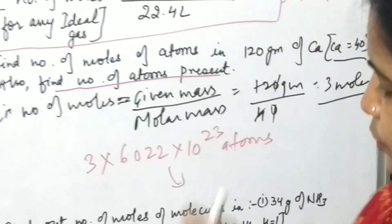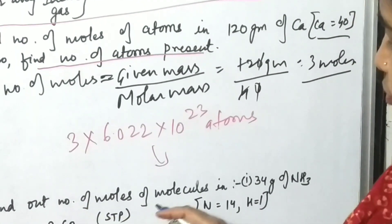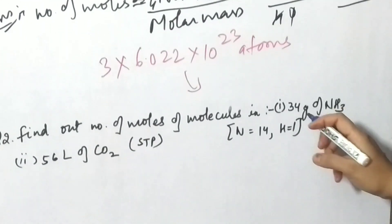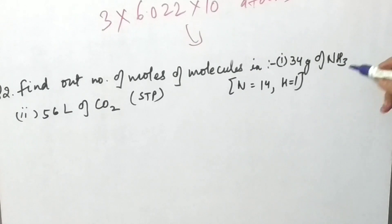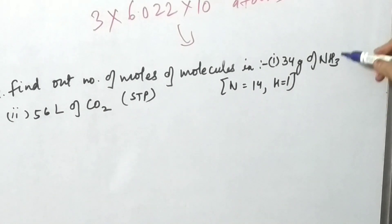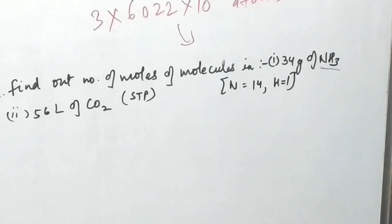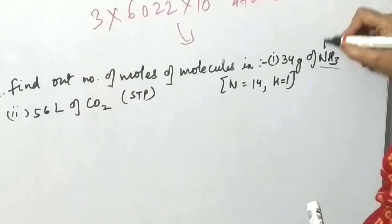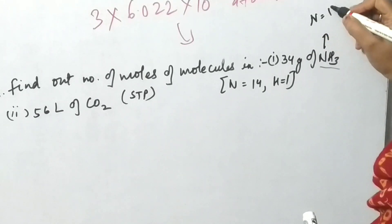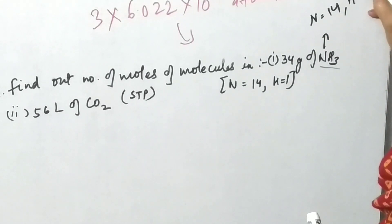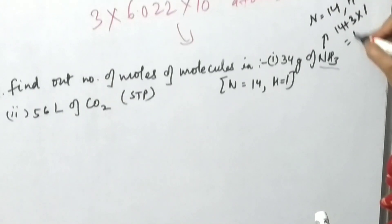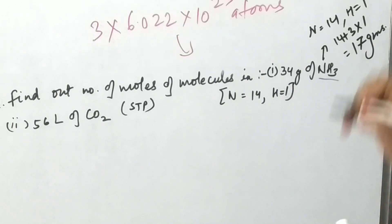See here we have taken a molecule, not atom, so we will talk about ammonia molecule. Now we have to find out first of all its molar mass. How will you calculate the molar mass of ammonia? The atomic mass of nitrogen is 14 and hydrogen is 1, so here it will be 14 + 3 × 1, so it will be 17 grams. We have got the value of molar mass as 17 grams.